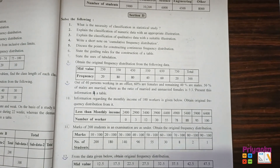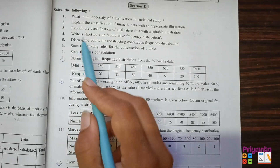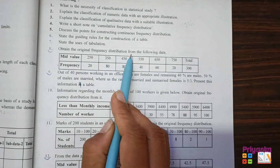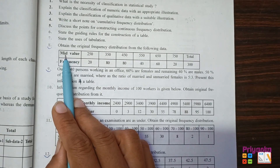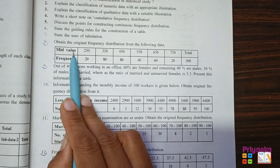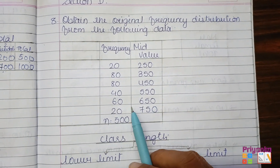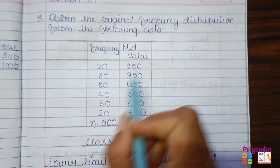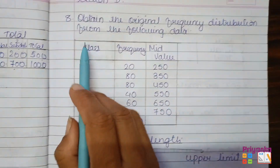Section D starts from page number 61 and calculations start from question number 8. The remaining are theories. From question number 8: obtain the original frequency distribution from the following data. They have given only the mid value and frequency, so out of mid value and frequency we will find out the original frequency distribution. Original frequency distribution means we need to find out the class.